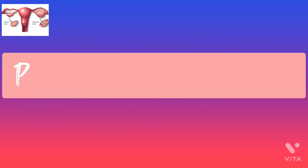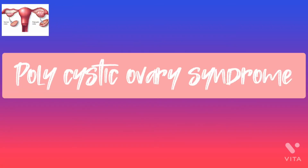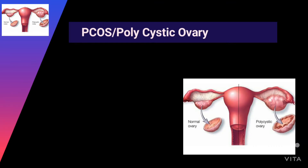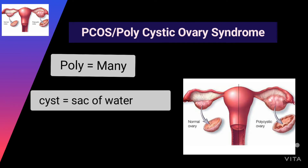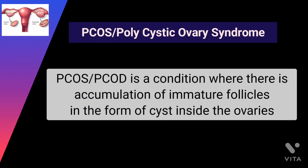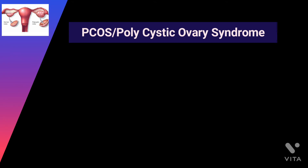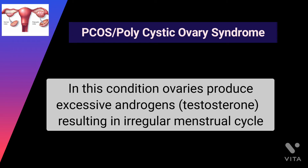Today's tutorial is about PCOS, or polycystic ovarian syndrome. 'Poly' means many, 'cyst' means sac of watery fluids. PCOS is a condition where there is accumulation of immature follicles in the form of cysts inside the ovaries. In this condition, ovaries produce excessive androgen or testosterone, resulting in an irregular menstrual cycle.